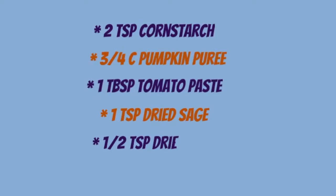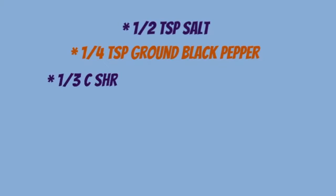one teaspoon tomato paste, one teaspoon dried sage, half a teaspoon dried basil, half a teaspoon paprika, half a teaspoon salt, a quarter teaspoon ground black pepper, one third cup vegan cheese.